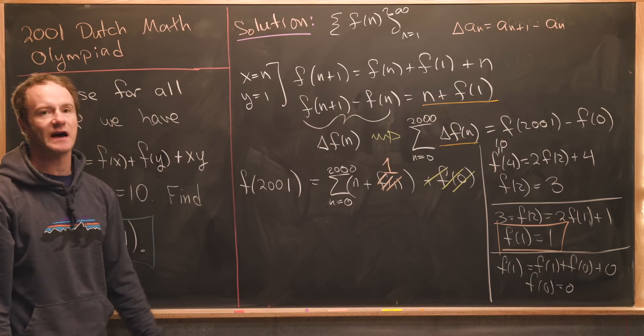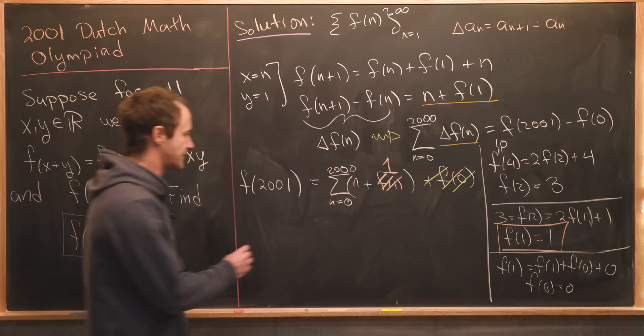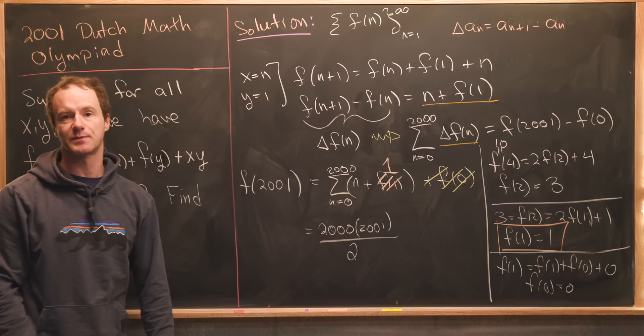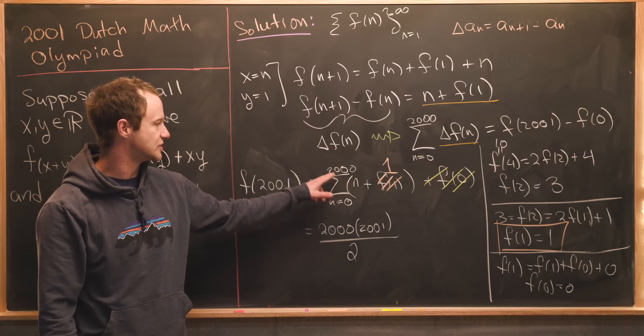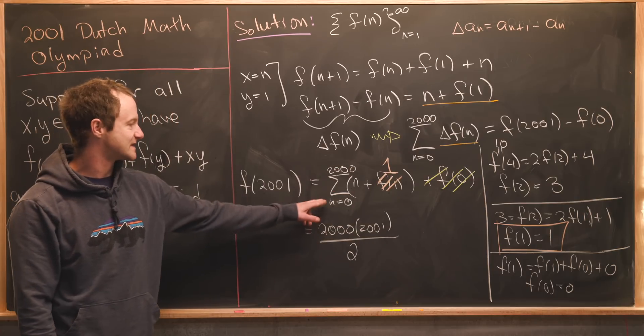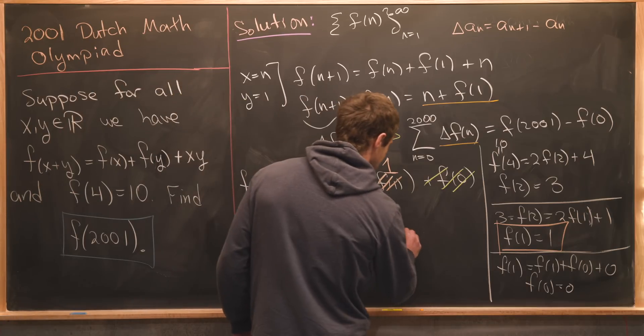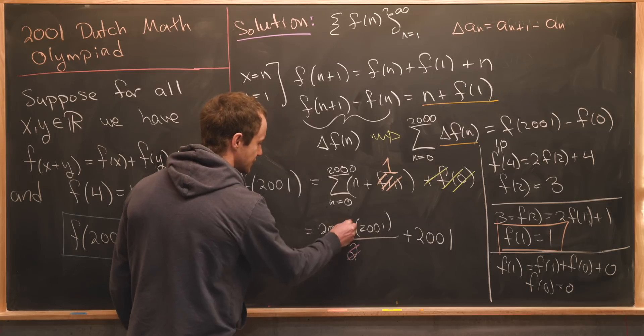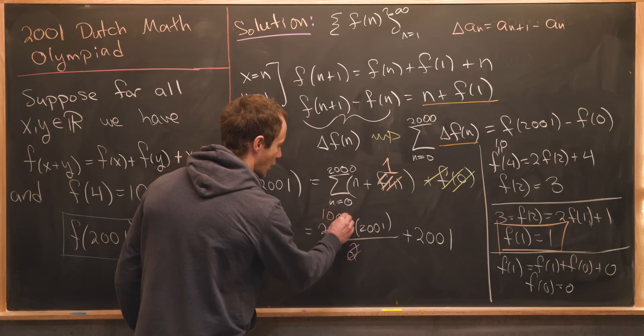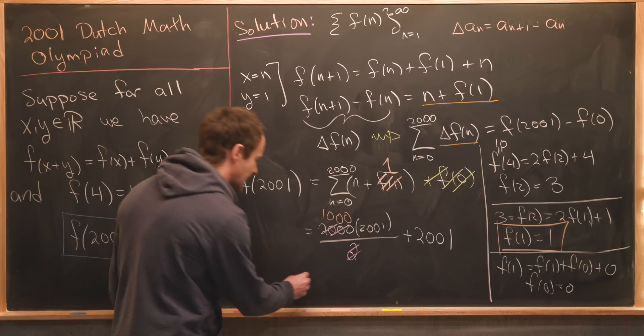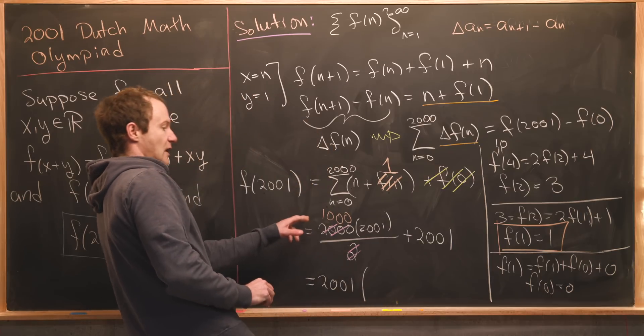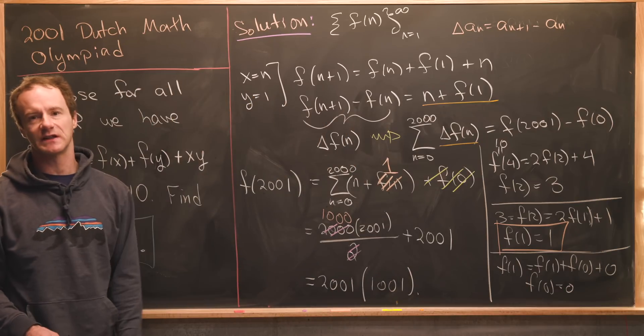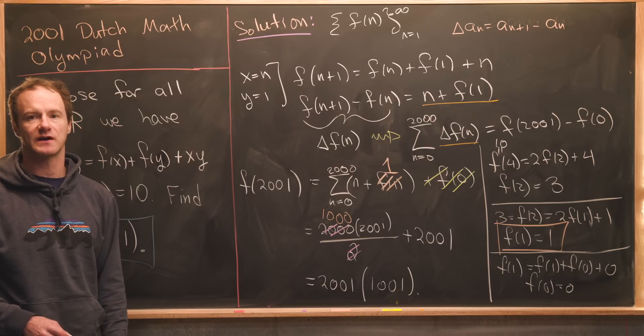We've got the sum as n goes from 0 to 2,000 of n. So that's like a triangular number that has a standard formula. That's going to give us 2,000 times 2,001 over 2. That's from summing up this part. And then we have to sum n from 0 to 2,000 of 1, but that's 2,001 total copies of 1. So that means we're going to add 2,001 to that. Now we can simplify that a little bit. We can take this 2, cancel it with this 2,000 and that's going to give us a 1,000. And then we can maybe factor this 2,001 out. So we get 2,001, and then we'll have 1,000 plus 1, so that's going to be times 1,001. We'll just leave it like that because at this point we've got a standard calculation to finish it off. And that's a good place to stop.